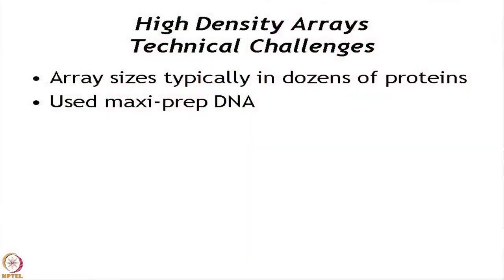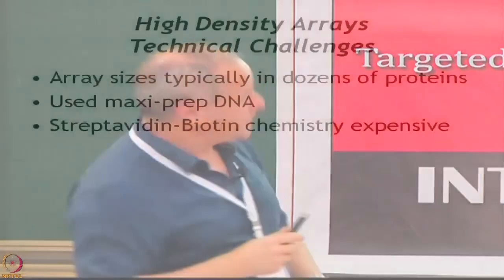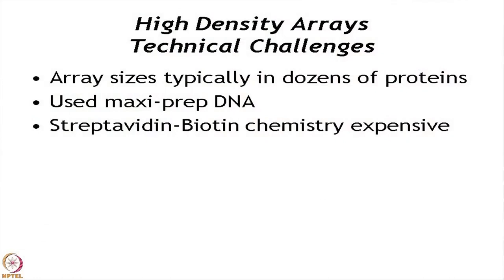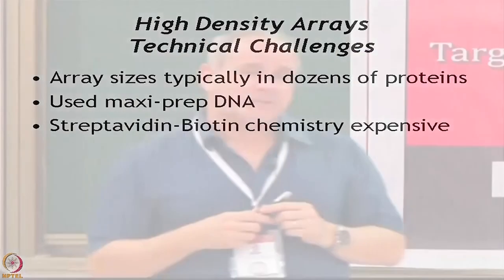At that time we were working in the dozens range and using maxi prep DNA. If you're going to do thousands of proteins and remember that what we need to make is DNA — not protein, which is advantageous because it's easier to make and purify DNA and much easier to quantify — but still, if you want to do an array of 10,000 proteins, then you have to prepare 10,000 DNAs. You can't do that by maxi prep — you have to be working at small scale that's reproducible and reliable. We were also using streptavidin-biotin chemistry for our arrays at the beginning, and that clearly was not going to work because it's expensive and involved having to put them in the UV box. The UV cross-linking part was cumbersome.